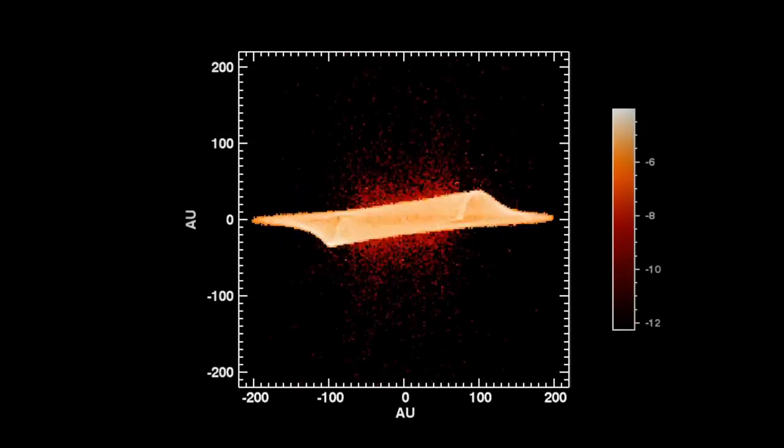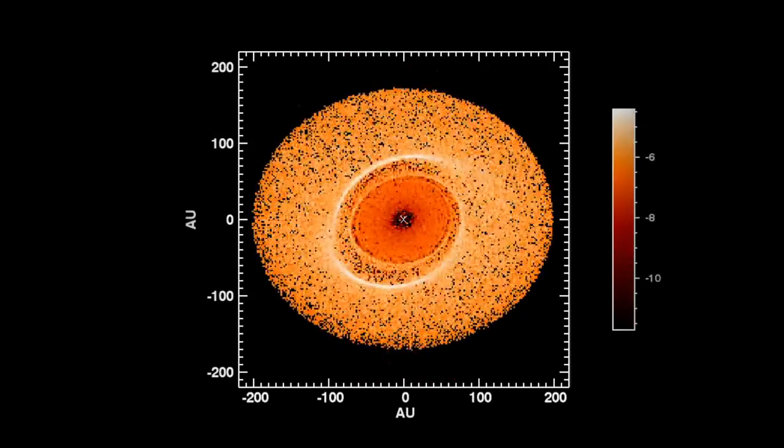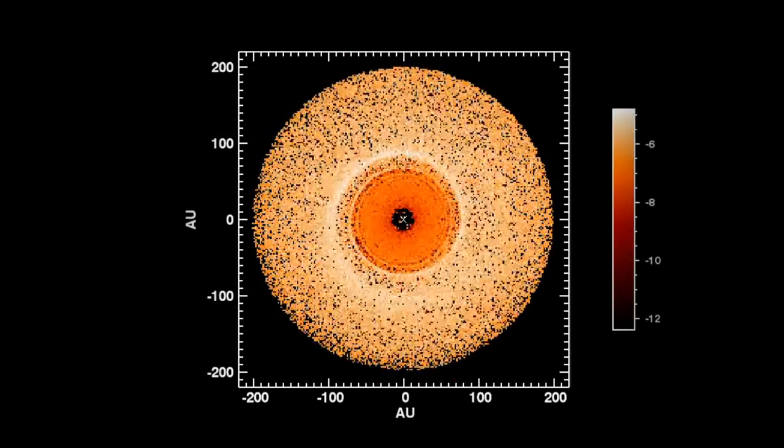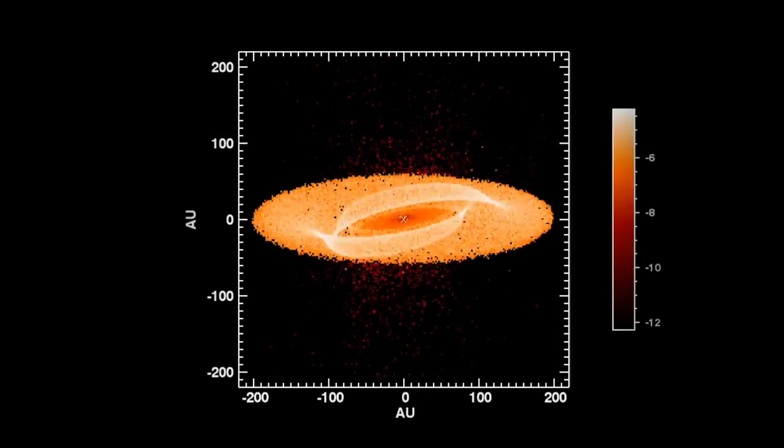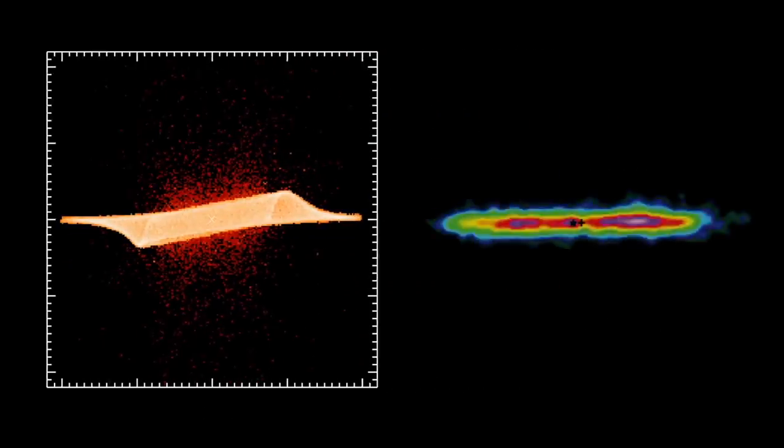We're creating a virtual solar system inside the computer, and by tweaking the parameters of this system, we can control what this virtual debris disk looks like. Then we can compare our results to the actual images of the debris disk we see and understand how the planet could be creating these different shapes in the disk.